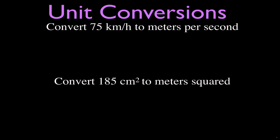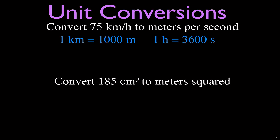This next one is a bit more complex because we're converting 75 kilometers per hour to meters per second — so we need to convert both the distance unit and the time unit. We need two conversion factors: one kilometer equals one thousand meters, and one hour equals three thousand six hundred seconds. Write 75 km/h as a fraction: 75 kilometers over one hour.